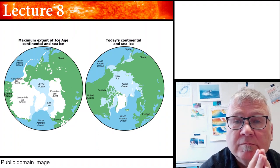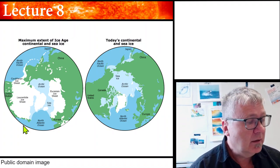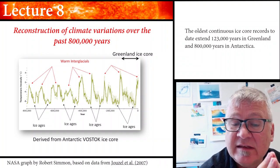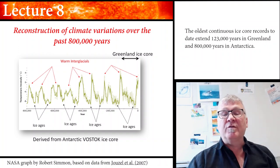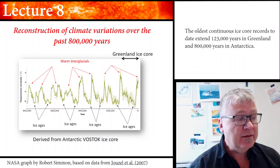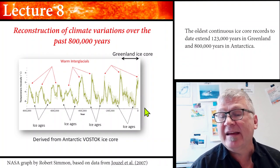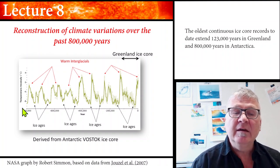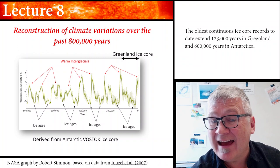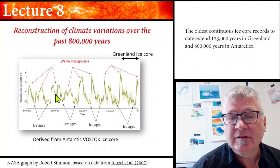Let's focus on ice core data. This is about an ice core taken from Antarctica — the Antarctic Vostok ice core — where you can reconstruct the past 800,000 years. This is a temperature reconstruction with the past on the left side, 800,000 years ago, and today on the right side. You can see Antarctic air temperature variations of about 10 to 12 degrees Celsius.